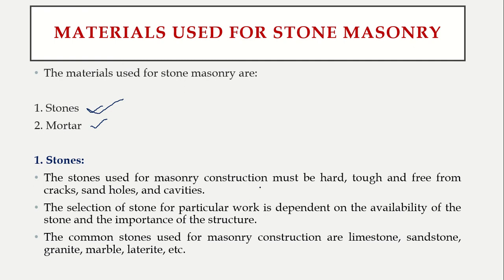Whatever type of stones you are using for masonry construction — whether a wall or a floor — the stones should be hard and tough, meaning they should be able to take sudden loads. They should not be soft in nature; you should not get any impressions made on the stone. They should be free from all types of fissures, cracks, and small cavities. The selection of stone for particular work depends upon the availability and the importance of the structure.